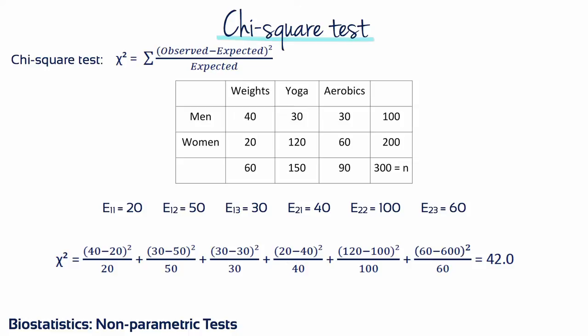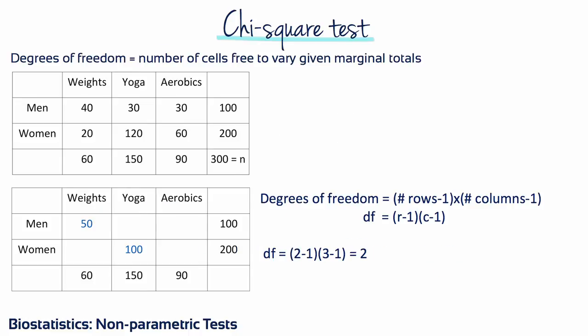In our example, chi-square equals 42. The calculated chi-square is affected by the number of cells in the table. With more cells, it is easier to attain a large chi-square. We need to take into consideration the number of cells, or degrees of freedom, since this will affect the probability of observing a specific chi-square value.